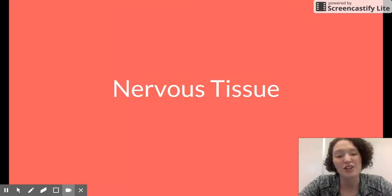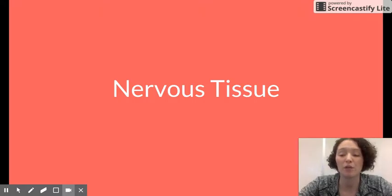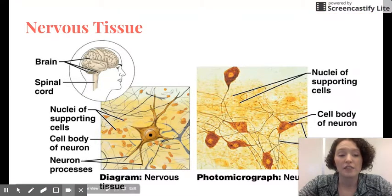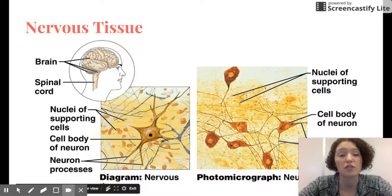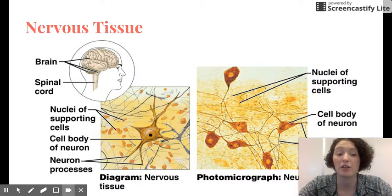The last is nervous tissue. This is a pretty simple tissue, not actually in terms of function, but in terms of what we're going to talk about it right now. We're going to talk more about this when we get to our nervous system. Nervous tissue basic functions are going to be receiving and conducting electrical signals or electrical impulses from one part of a body to another part of the body.